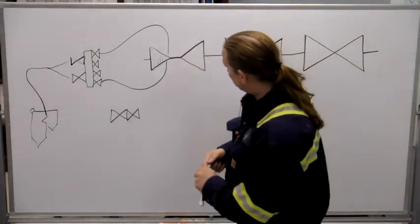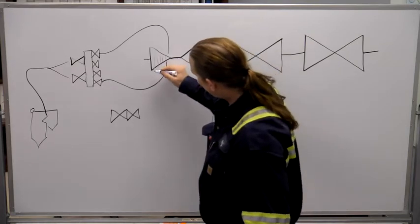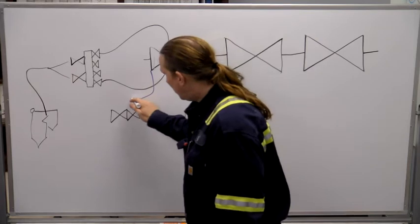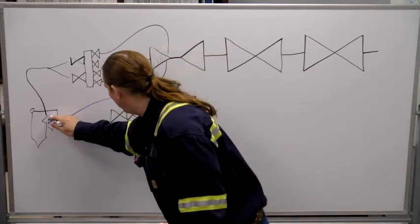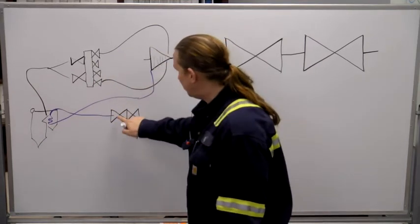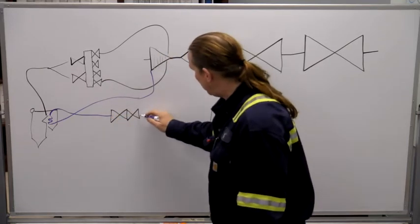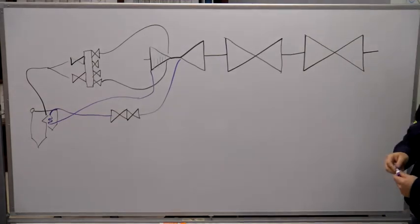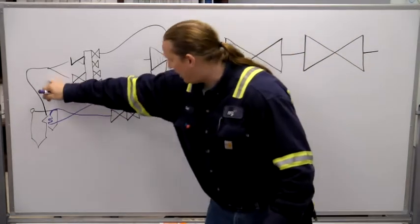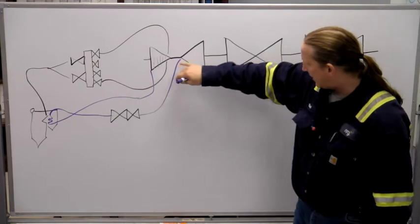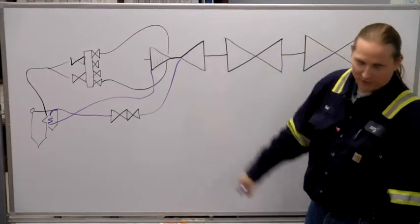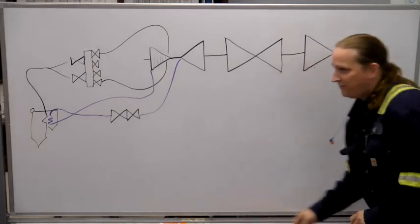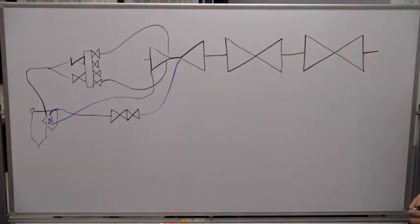The steam exhausts from the HP turbine, goes into the back pass and gets heated back up, and then goes to the intercept valves before it goes into the IP turbine. IP is intermediate pressure. We started out at about 2,500 pounds, and now we're at like 600–700 pounds somewhere in there.